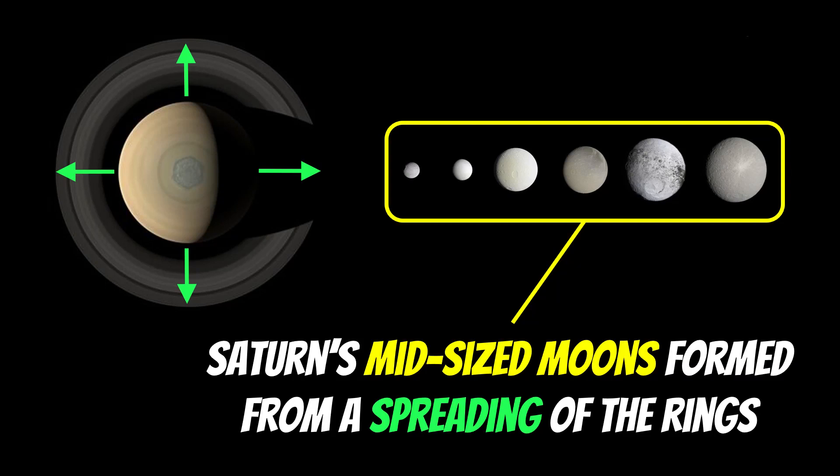Of all the planets in the solar system, Saturn has the largest collection of moons, kind of in line with Jupiter as well. They're both large planets, and they also have a large collection of moons.